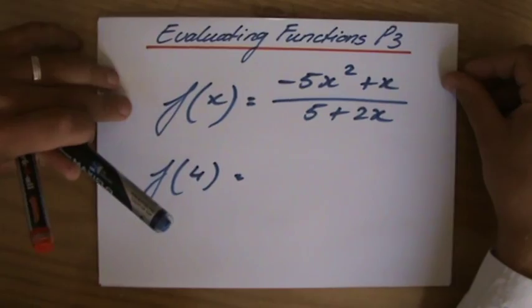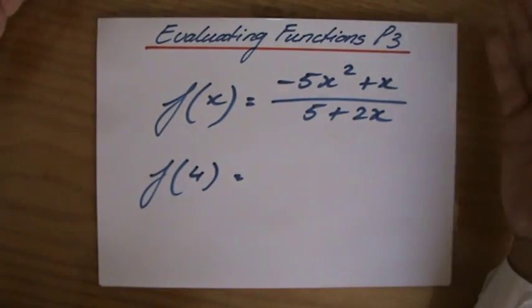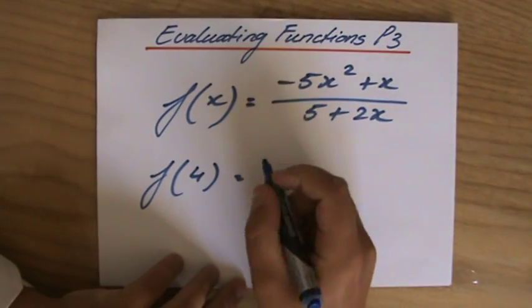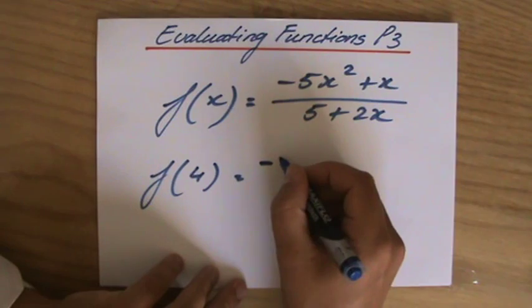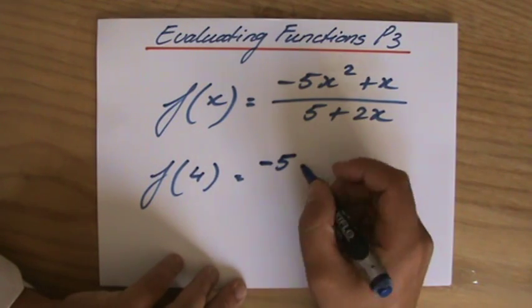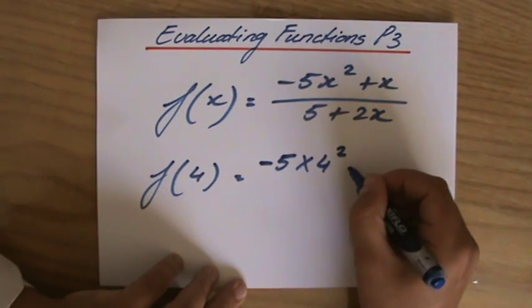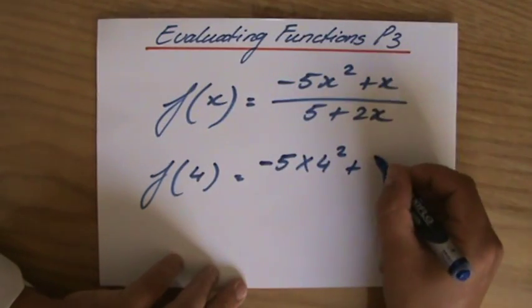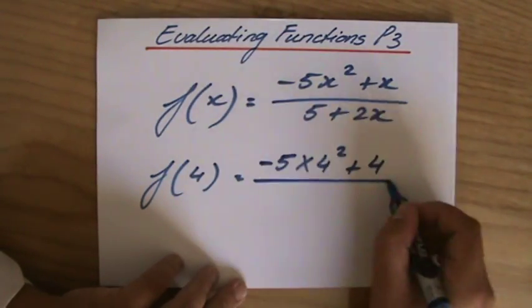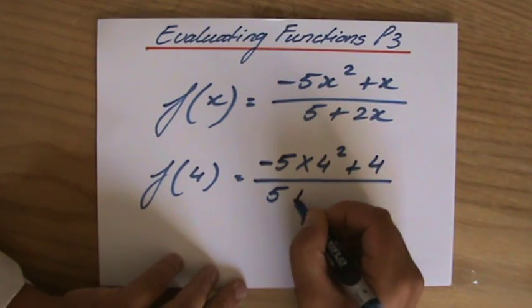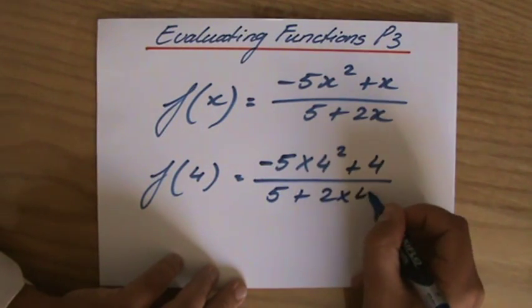Now, I'm not doing all of this in my calculator because I don't have to. I'm going to write down my workings because that's going to give me points. Minus 5 times 4 squared, let's write it down, plus x, so plus 4, and all of that divided by 5 plus 2 times x, so 2 times 4.